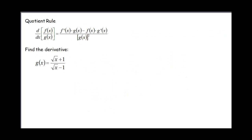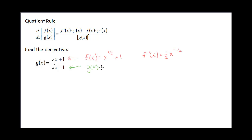Let's look at another example. This time our function has some square roots in it. Another thing going on here is our function name is g of x, so don't let that confuse you — we're still going to think of our numerator as our f of x. I'm going to rewrite that as x to the 1/2 plus 1, and I'll go ahead and find the derivative of that f, so that's 1/2 x to the minus 1/2. And my g for the quotient rule formula is x to the 1/2 minus 1, so g prime of x is the same as f prime of x: 1/2 x to the minus 1/2.